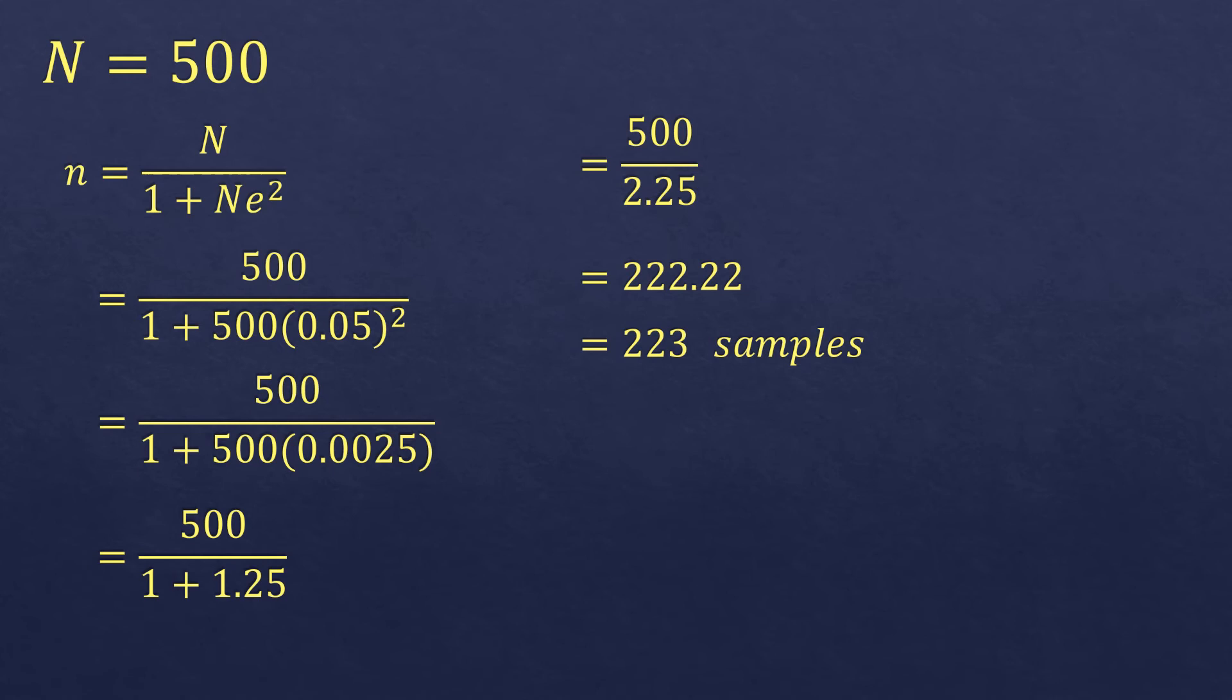So again, you do not round off, but we round up. As long as there is something, point something, even if it's 0.001, you round up.